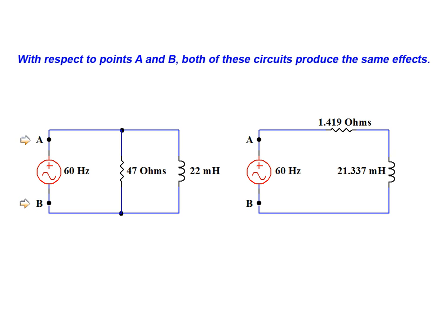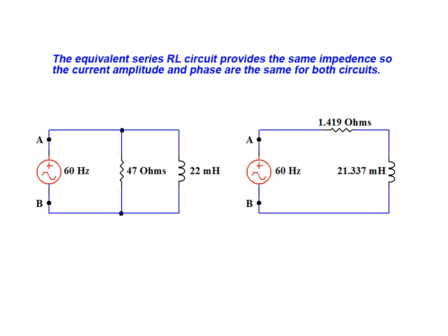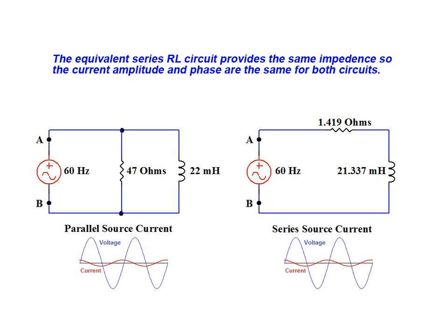With respect to points A and B both of these circuits produce the same effects. Because the equivalent series RL circuit provides the same impedance, current amplitude and phase will be the same for both circuits.